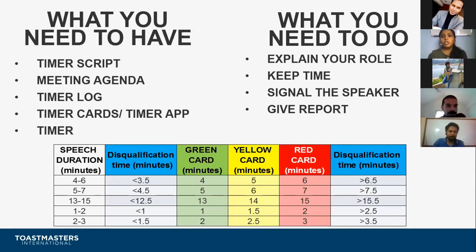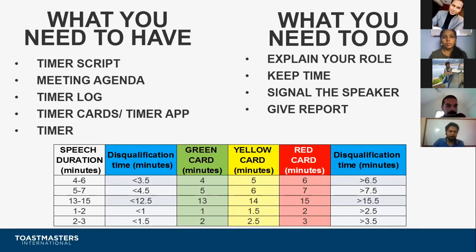Usually in a Toastmasters session, prepared speeches are 5 to 7 minutes long, so the green card is flashed at 5 minutes, yellow at 6 minutes, and red at 7 minutes. For the icebreaker, the speech is 4 to 6 minutes long, so green is flashed at 4 minutes, yellow at 5 minutes, and red at 6 minutes.